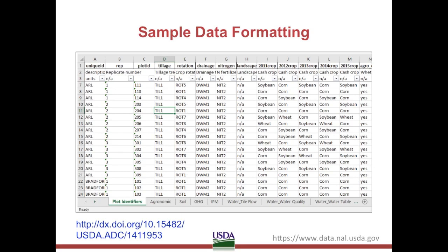Let's try an example together. We will reformat a data file that, while accurate and contains a wealth of information, is not tidy and is certainly not machine-readable. However, a restructure can make this data machine-readable and compliant with U.S. Federal objectives to produce machine-readable data. This example is an Excel format data file from the AgData Commons. We will walk through how to reformat and present this data to be machine-readable and compliant with Open Data Policy.